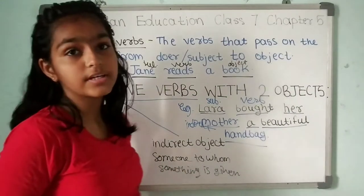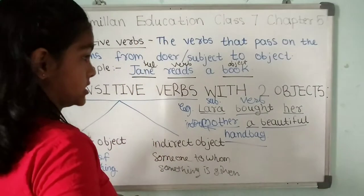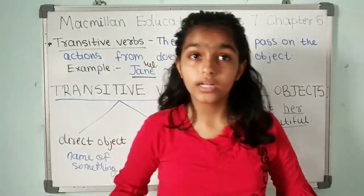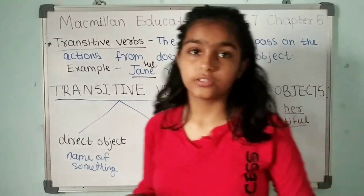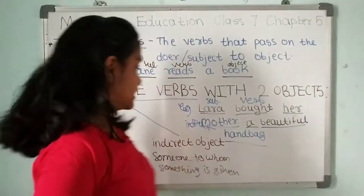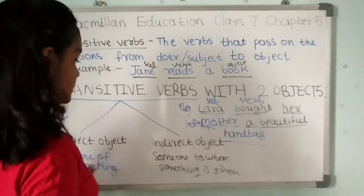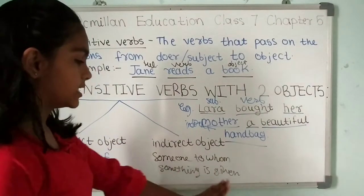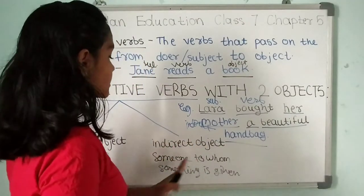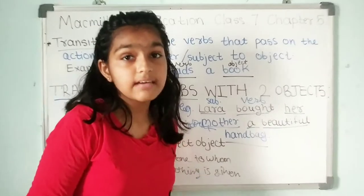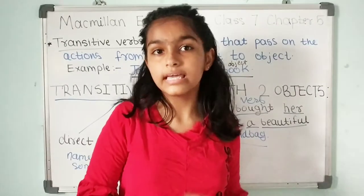Now let's study the two different types of transitive verbs — transitive verbs with two objects. In transitive verbs, there are two kinds of objects: first is a direct object and second is an indirect object. Direct object means the name of something, and indirect object means someone to whom something is given.